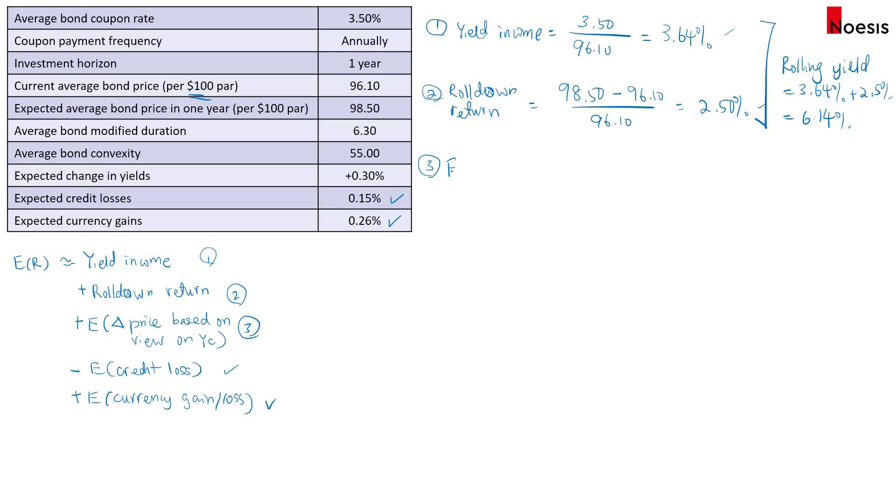Then for the third item, the expected change in price. And this is based on the investor's view on yield curve. So this will be equals to negative modified duration times the change in yield plus half multiplied by convexity multiplied by the change in yield squared.